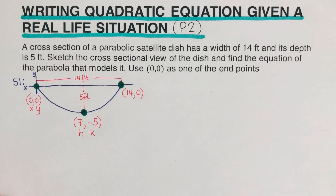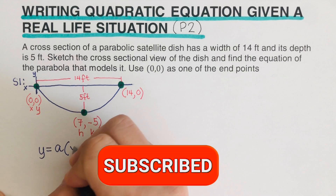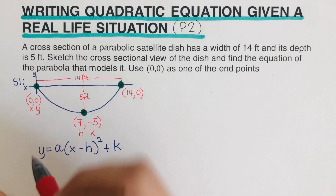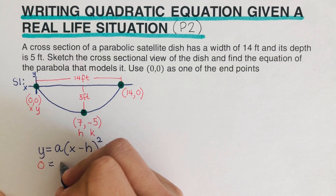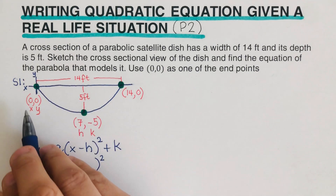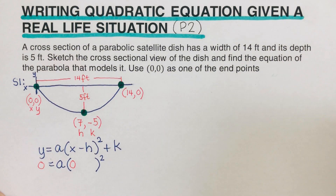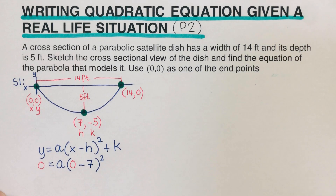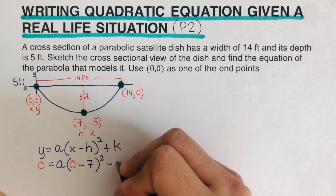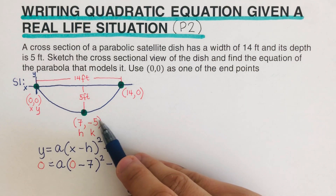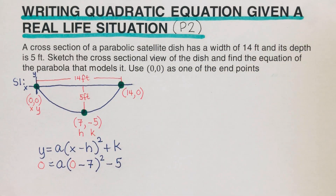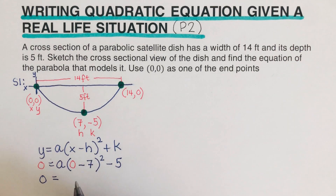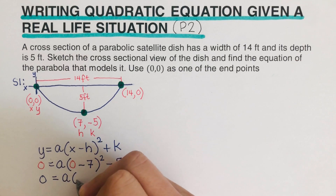We plug the values into y = a(x − h)² + k. Our y is 0, x is 0, h is 7, and k is −5, giving us: 0 = a(0 − 7)² + (−5). Simplifying: 0 = a(−7)² − 5.